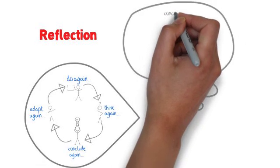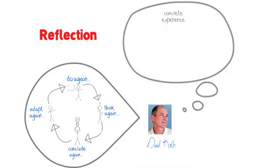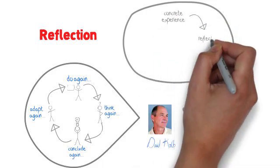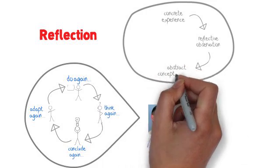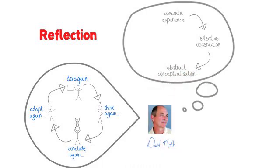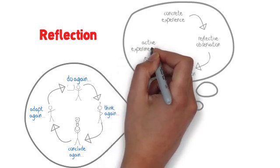Now the names he came up with are as follows: Concrete experience for the doing stage, Reflective observation for the thinking stage, Abstract conceptualization for the concluding stage, and active experimentation for the adapting stage.